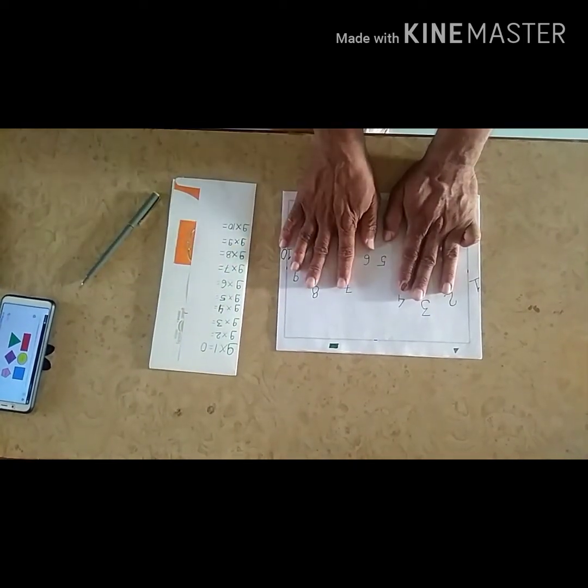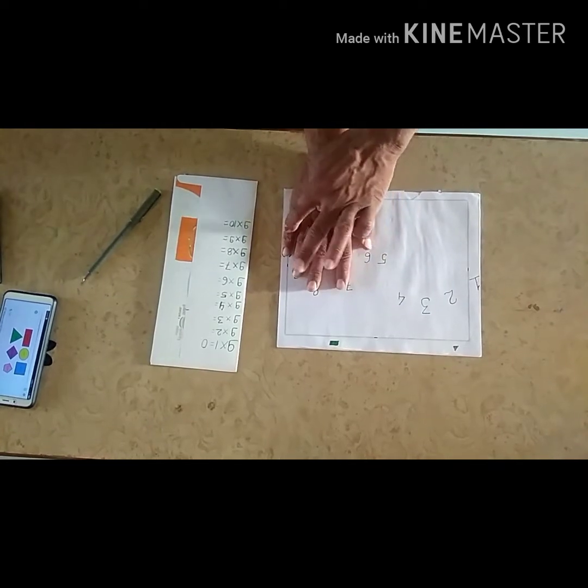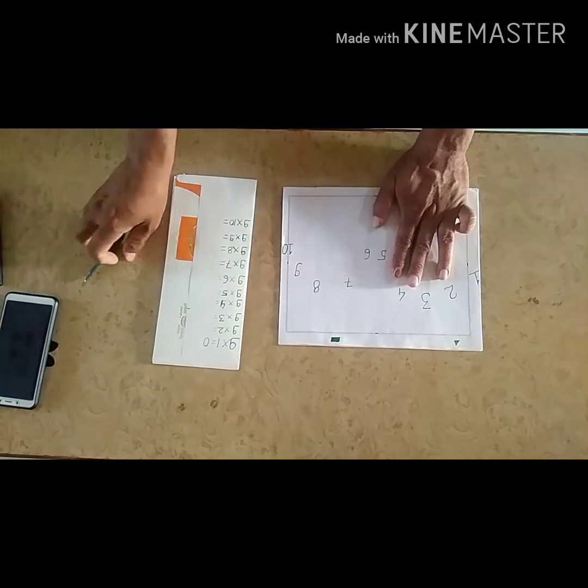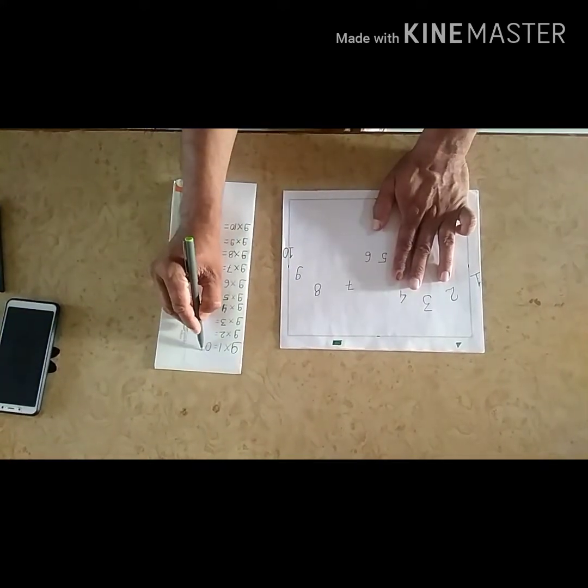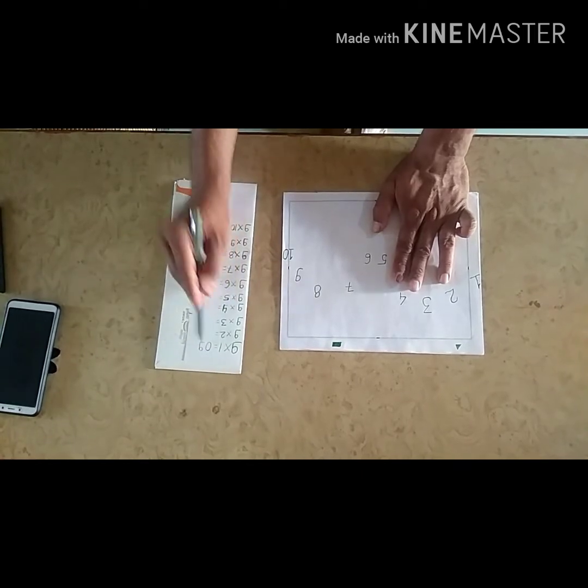On the right, we will count 1, 2, 3, 4, 5, 6, 7, 8, 9. 9 fingers are on the right, no finger on the left. So we will write 9. In this way, 9 into 1 is equal to 9.